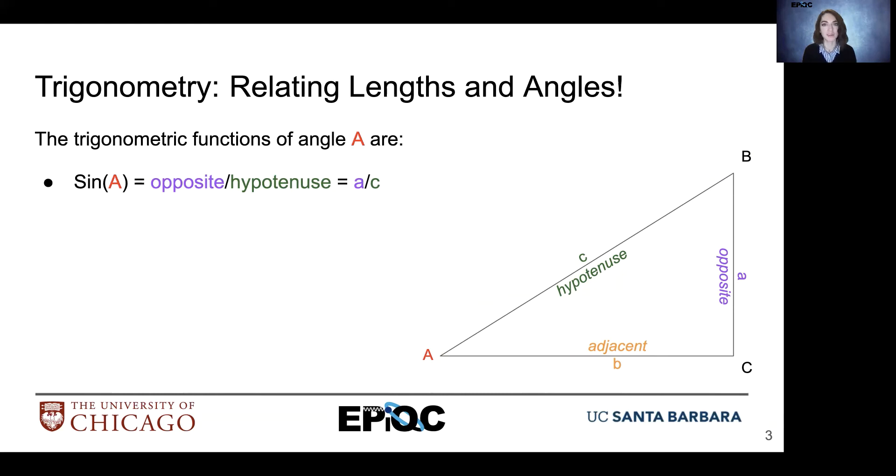Sine of A is equal to opposite over hypotenuse, A over C. Cosine of A, which is equal to adjacent over hypotenuse, or B over C. And tangent of A, which is equal to opposite over adjacent, A over B. To remember all of this, you can just think SOHCAHTOA.